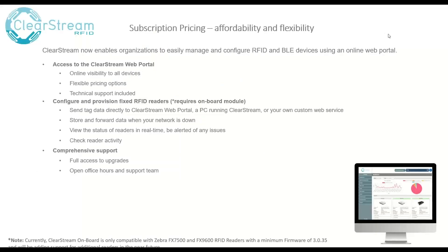The subscription model within Clearstream — in the past, we offered Clearstream as a perpetual model where you add a number of licenses of readers or devices. Clearstream now supports subscription licensing, which gives you the flexibility to use our online web portal to see the status of your system. You can see which devices are started, stopped, or in an error state — maybe disconnected due to a network failure — and view all of that from any web-enabled device. If you have a large system of RFID readers or Bluetooth gateways, you can now log into the subscription portal to see if they're all successfully online and running, or if there are any issues.